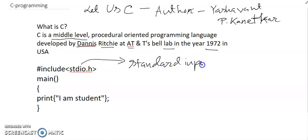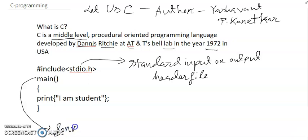Standard input or output header file. We need header file, this is the first number. Another factor is main. What is the meaning of main? Main is the format. You can say this is the syntax of C language.